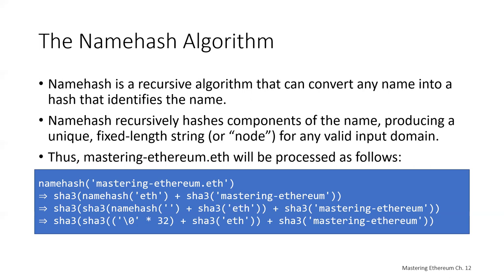So we're hashing sub-domain, example, and .eth separately and then combining them. The first actual hashing computation is for .eth: Keccak of the root node plus Keccak of .eth. The root node is the base case for recursion — we can't define it recursively or the algorithm will never end, so the root node is just zero. Putting this all together, our hash is Keccak of Keccak of Keccak of (zero plus Keccak of .eth) plus Keccak of example, plus Keccak of sub-domain.